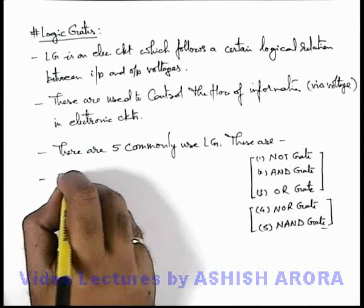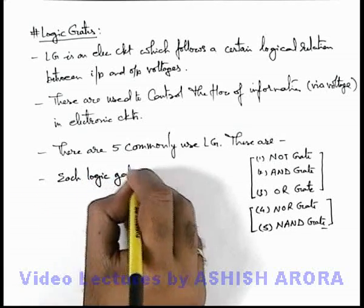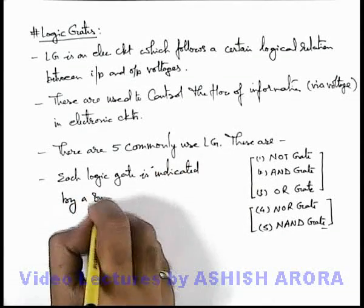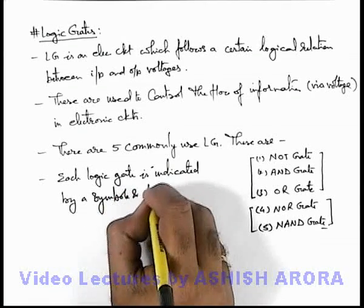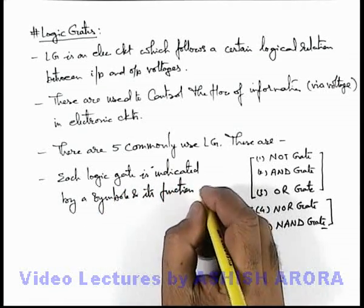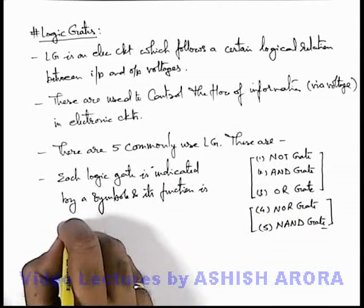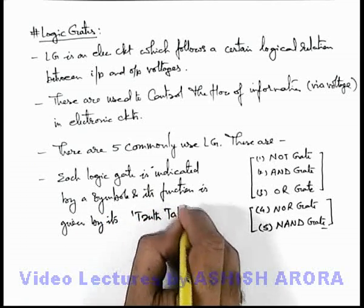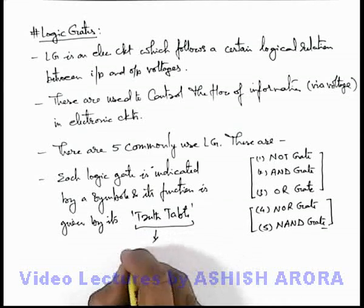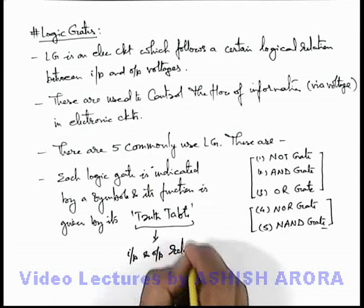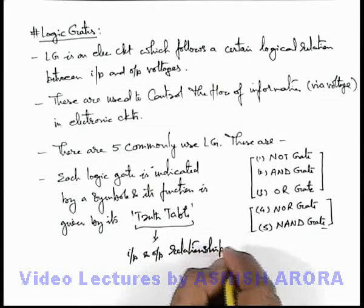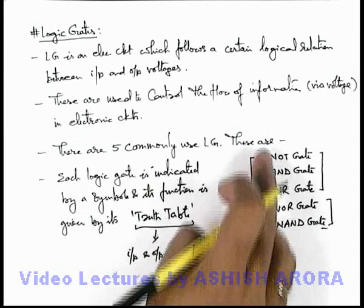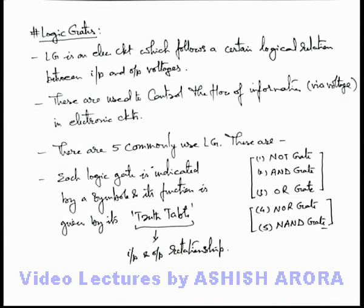We must also understand that each logic gate is indicated by a symbol, and its function — that is, the relationship between input and output — is given by its truth table. This truth table is basically the input and output relationship for various combinations of input signals and the corresponding output signal. We will understand the symbol as well as the truth table for all these basic commonly known gates from the next section, one by one.